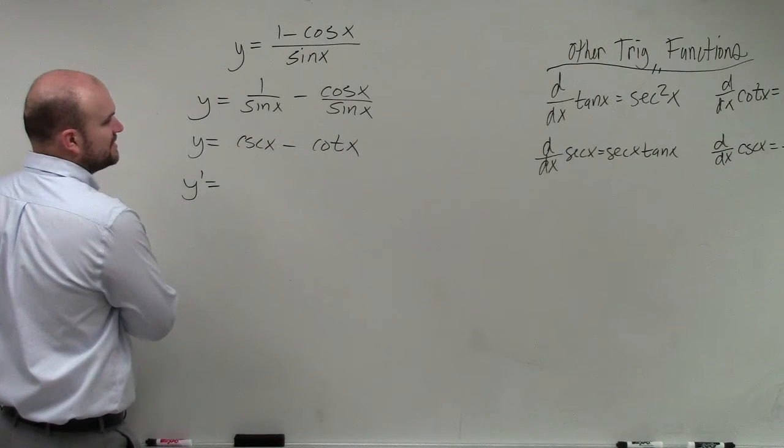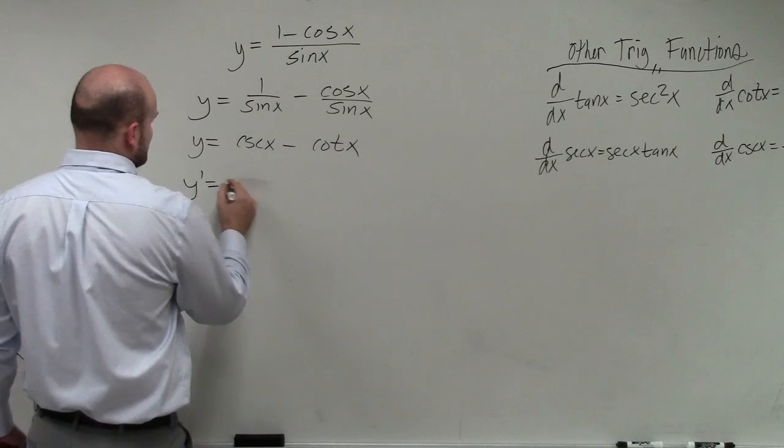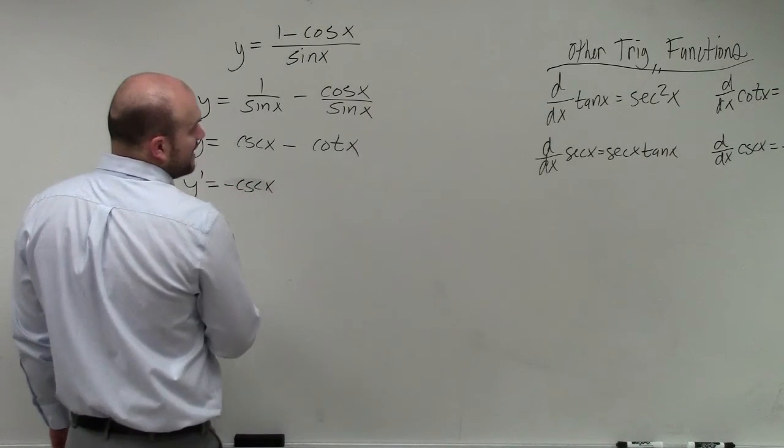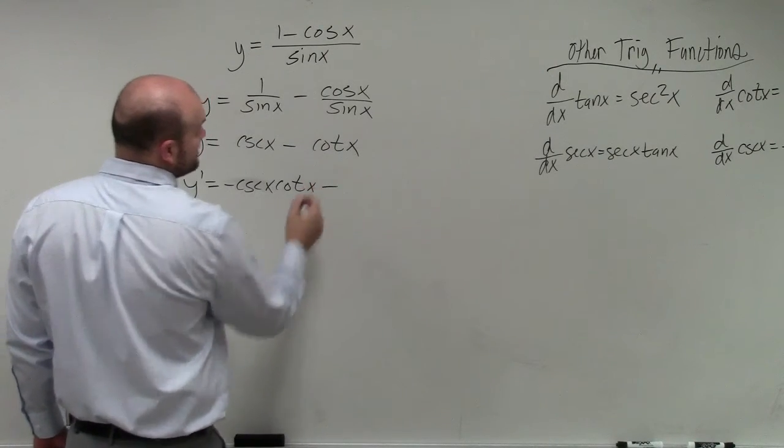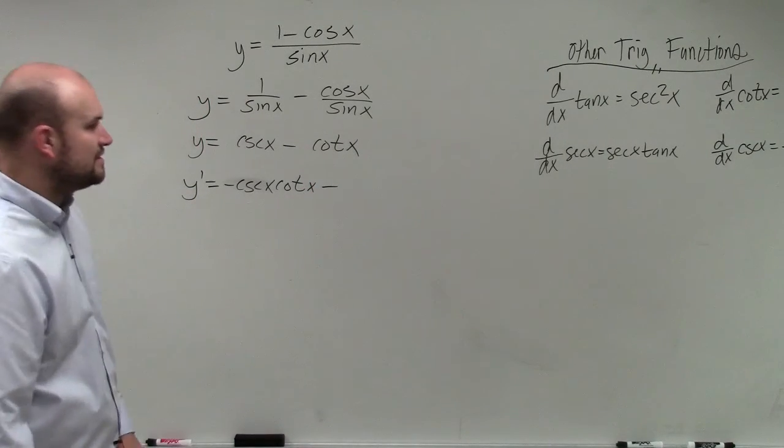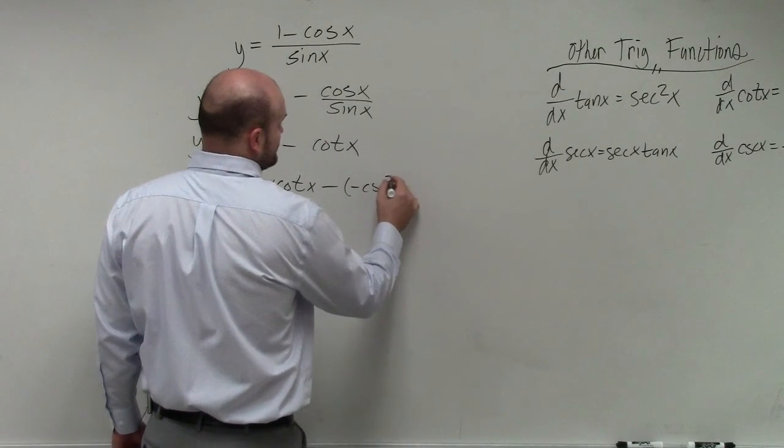So the derivative of cosecant of x is going to be negative cosecant of x times the cotangent of x, and then that's going to be minus the derivative of cotangent of x, which is negative cosecant squared of x.